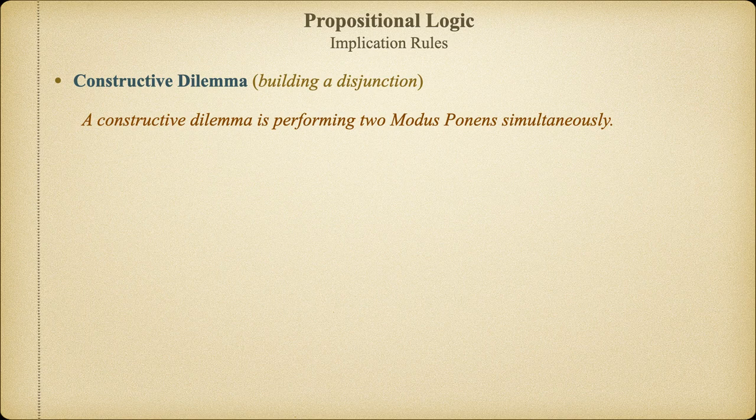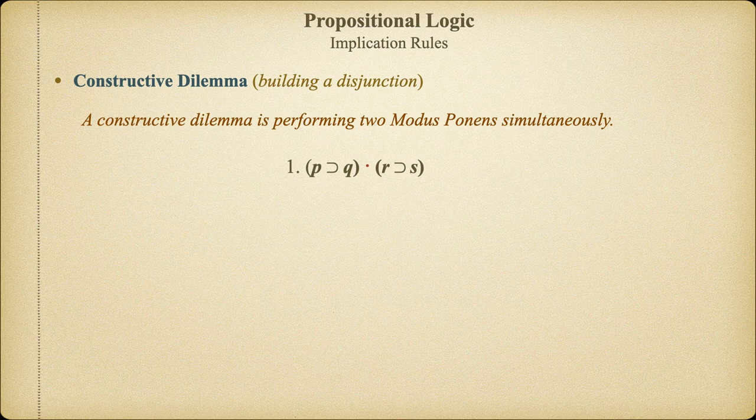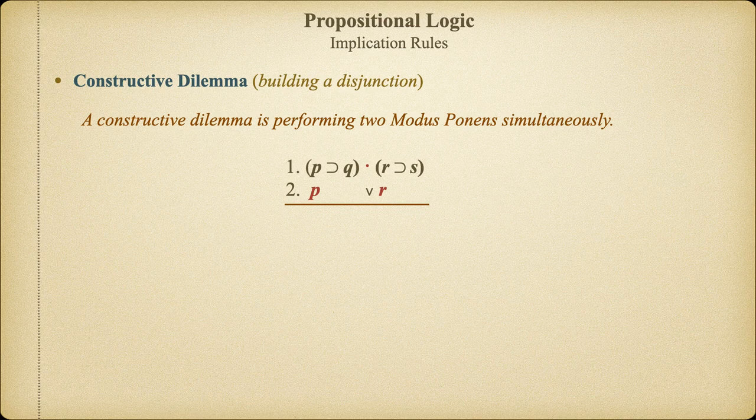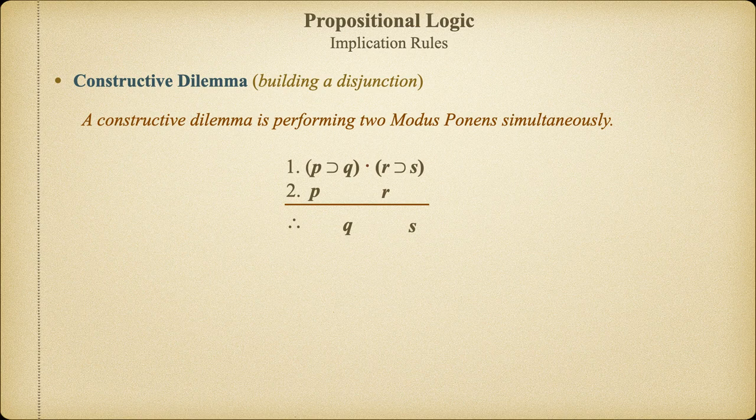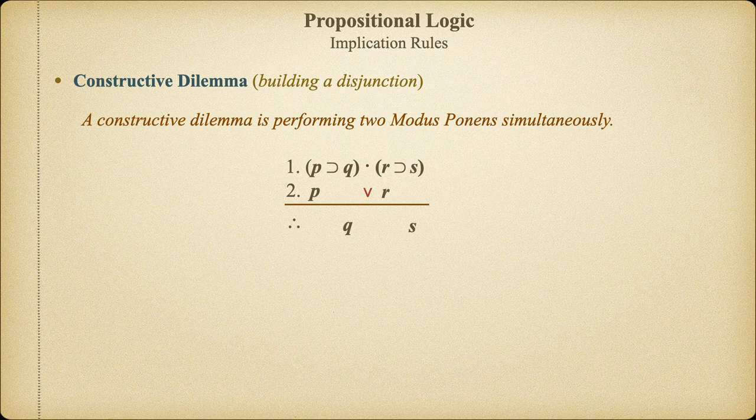Another way of thinking about this is that constructive dilemma is like performing two modus ponens simultaneously. First, note again the conjunction of the two material implications. In the second premise, we have the disjunction of the antecedent of the two material implications P and R. Because we are affirming the antecedents, we can conclude the consequence. But notice that P and R are disjuncted and not conjuncted. That means we don't know which of them has to be true. And that in turn means we cannot conclude that both Q and S are true, but only that one of them must be true.